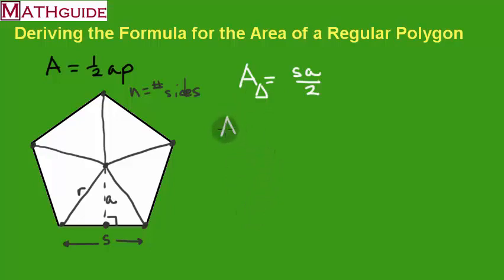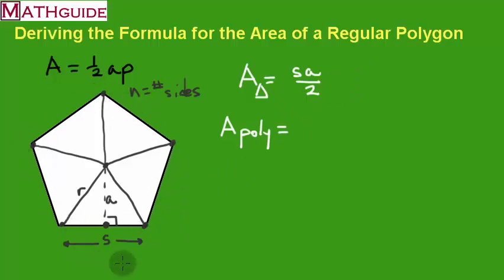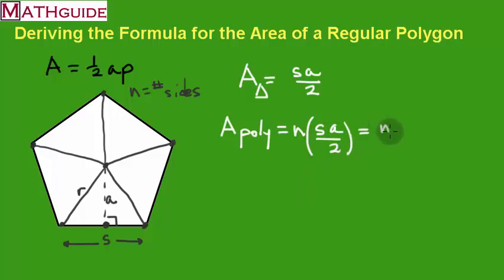Now let's calculate the area of the entire polygon. I'll take the area of one isosceles triangle and multiply by how many I have. If I'm dealing with an n-sided regular polygon, I have n sides and therefore n triangles. So n times the area of one isosceles triangle gives the area of the entire polygon — which works out to n times S times A divided by 2.